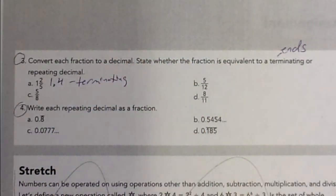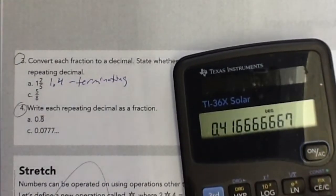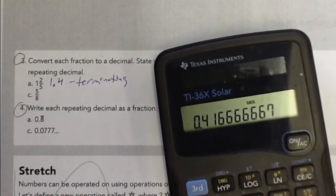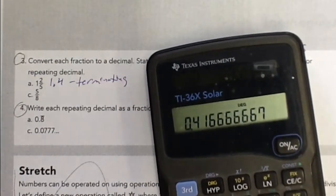Moving on to 5 twelfths. We'll do 5 divided by 12. And it's 0.41666 repeating. Your calculator will probably do what my calculator is doing, where it rounds at the end. Don't let that deceive you. It is repeating.